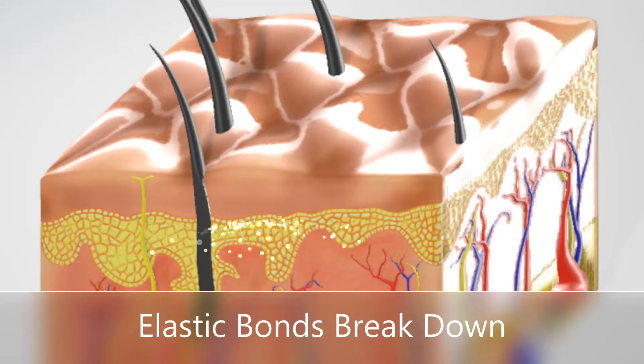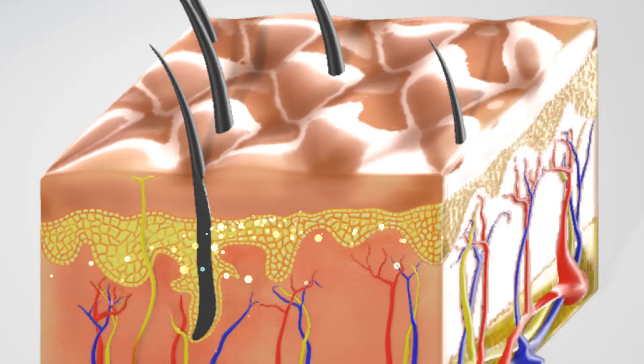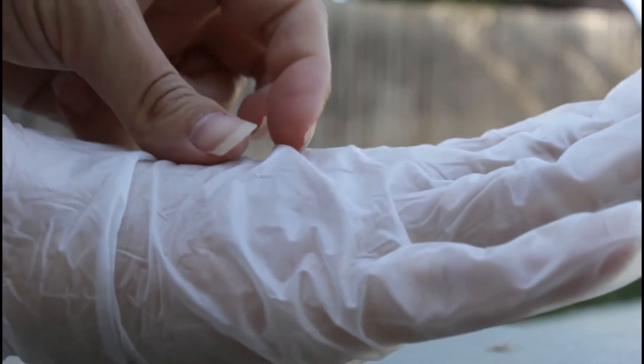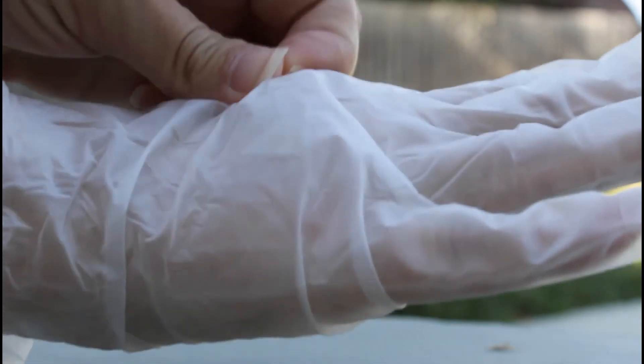Moreover, the tissue that joins the second layer of skin, the dermis, to the topmost layer, the epidermis, becomes weaker. Think of it as glue holding a vinyl glove tightly to your hand. With age, the glue begins to weaken and flatten.